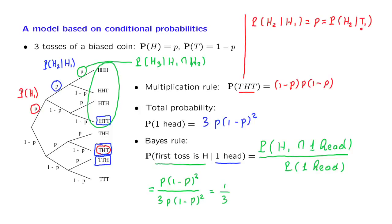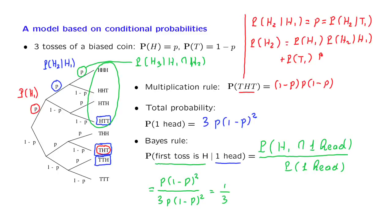Telling you the result of the first toss doesn't change your beliefs about what may happen in the second toss. If you calculate the unconditional probability of heads in the second toss using the total probability theorem, it equals the probability of heads in the first toss times p, plus the probability of tails in the first toss times p, which works out to equal p again. So the unconditional probability of heads in the second toss is the same as the conditional probabilities.